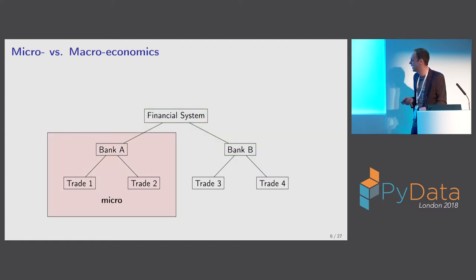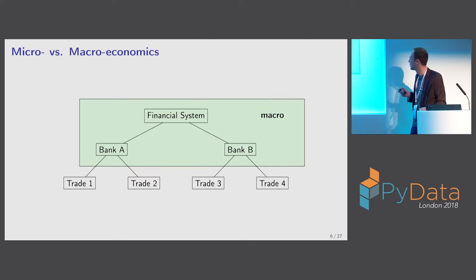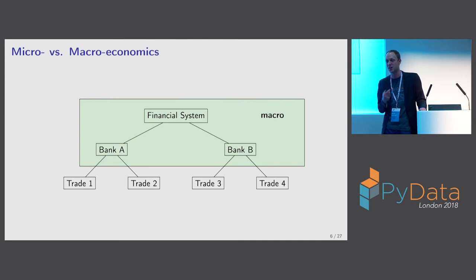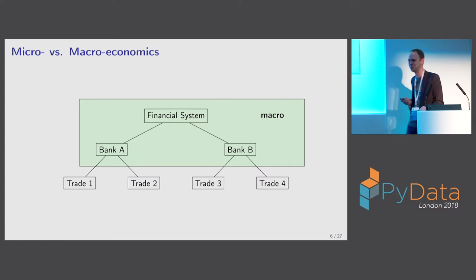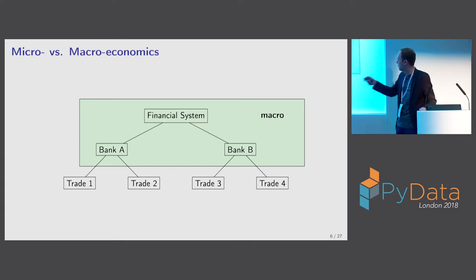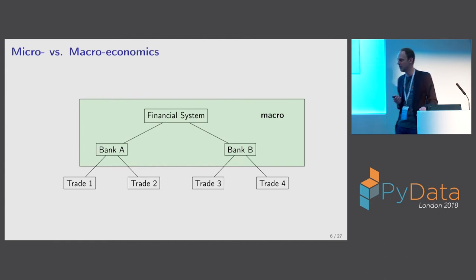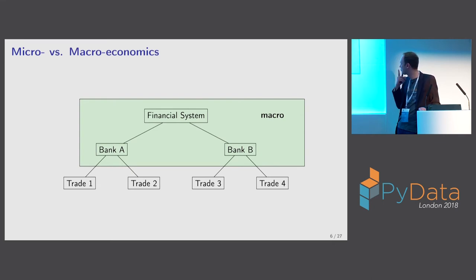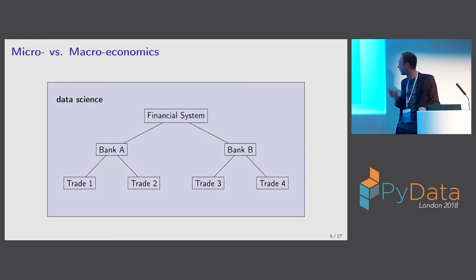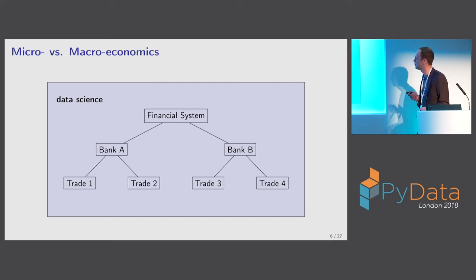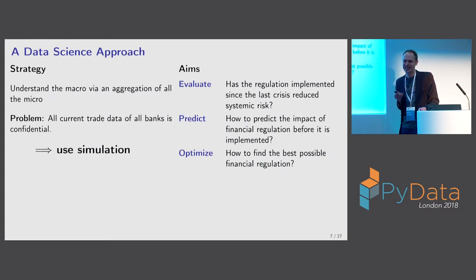The reason this split occurred historically is that studying the entire financial system in macro detail was too complex and too much data. But now there's big data and Python. The data science approach would be to just take everything and look at it. Unfortunately, this problem is simultaneously a big data problem and a no-data problem.